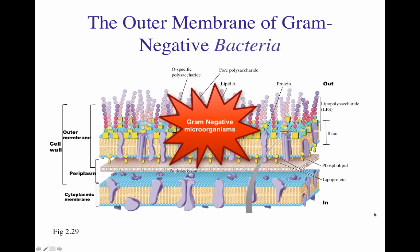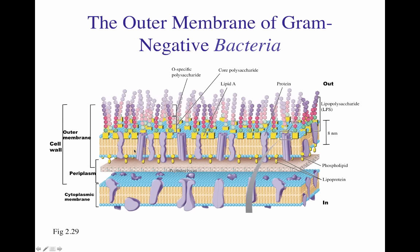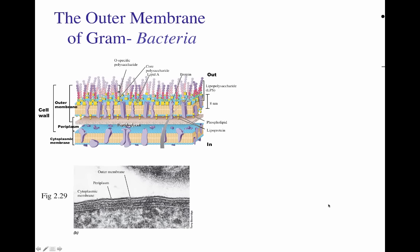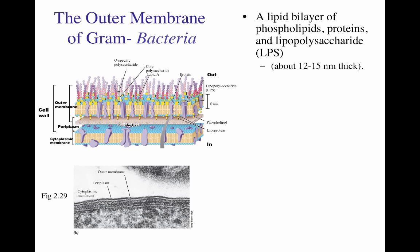The cell wall of gram-negative microorganisms contains an outer membrane and a peptidoglycan layer. The cell wall of gram-negative bacteria is composed of an outer membrane that has two different leaflets. It has the lower leaflet pointing to the peptidoglycan layer, which is composed of phospholipids.